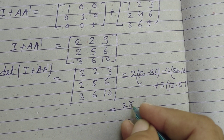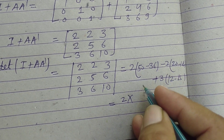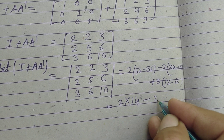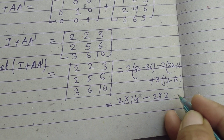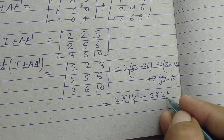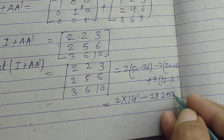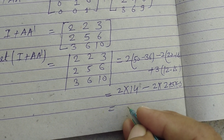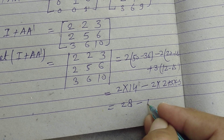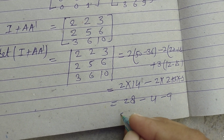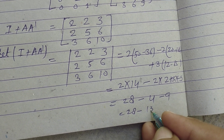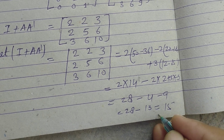So 2 times (50 minus 36) is 2 times 14, which is 28. Then minus 2 times 2 gives minus 4. And plus 3 times minus 3 gives minus 9. So 28 minus 4 minus 9 equals 15.